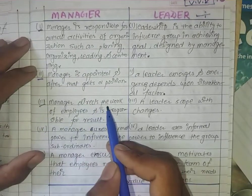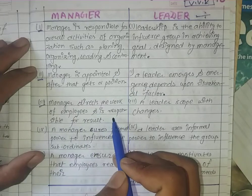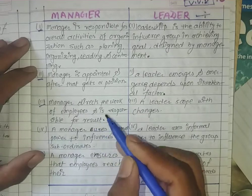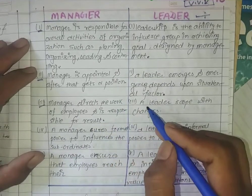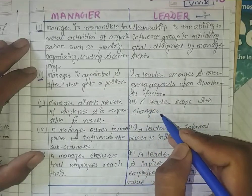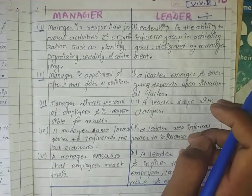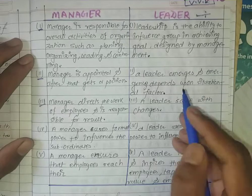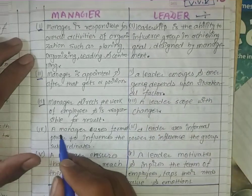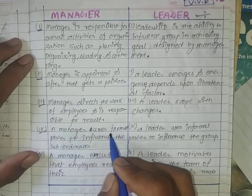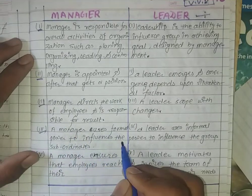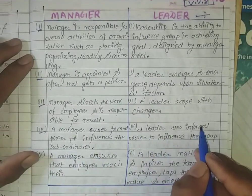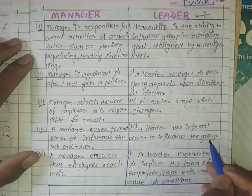The manager directs the work of employees and is responsible for results. The manager uses formal authority to influence subordinates. The leader also uses formal parameters to influence the group.